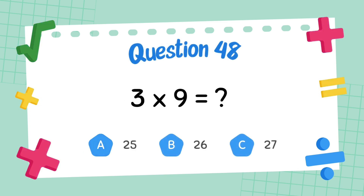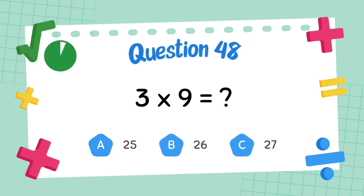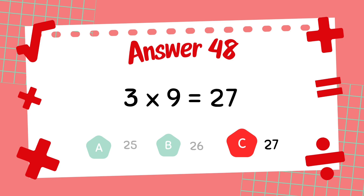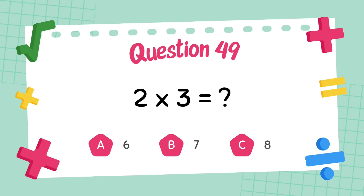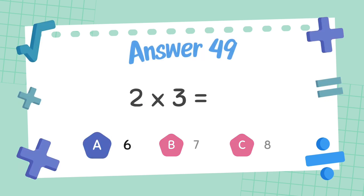What is 3 multiply 9? The answer is 27. What is 2 multiply 3? The answer is 6.